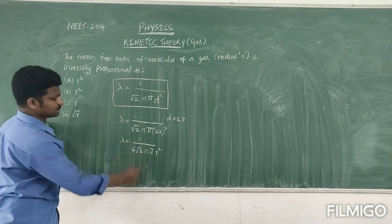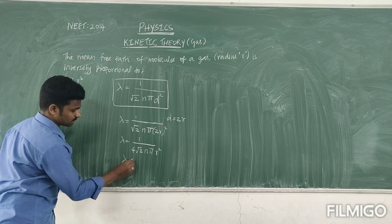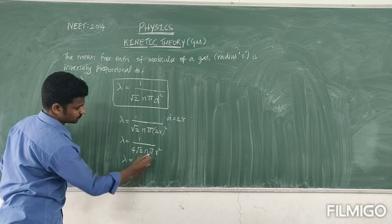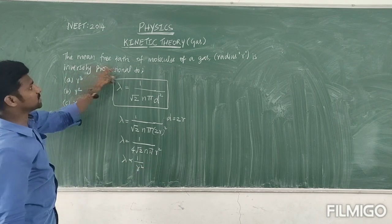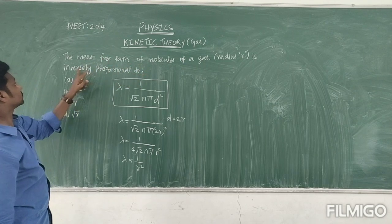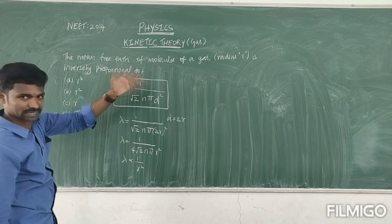So we need that relation related with R, so the remaining is constant. So lambda is inversely proportional to R square. So the question is, is inversely proportional, that is the lambda value is inversely proportional to the radius.